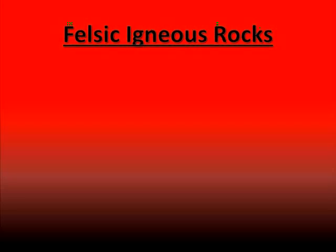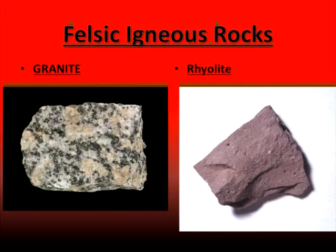So what this gives us is two different classifications of igneous rocks based on their chemical compositions. Now that we have a way to classify igneous rocks, we can look at some examples. We'll start off with felsic igneous rocks. Two really great examples are granite and rhyolite, and you'll notice, just like we said, with felsic igneous rock they are lighter in color.